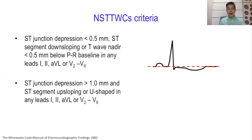Criteria number one: ST segment J-junction depression of less than 0.5 millimeter, or a downsloping ST segment, or a T wave nadir again less than 0.5 millimeter below the isoelectric baseline, in any of leads 1, 2, AVL, V2, or V6. These are the particular leads where these changes are labeled nonspecific.